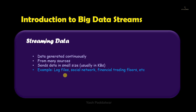Some examples of big data streams are log files — that is the continuous generation of timestamps of the data collected, or metadata. It can also come from social networking websites, or you can see big data streams in financial trading, which involves continuous market activity.